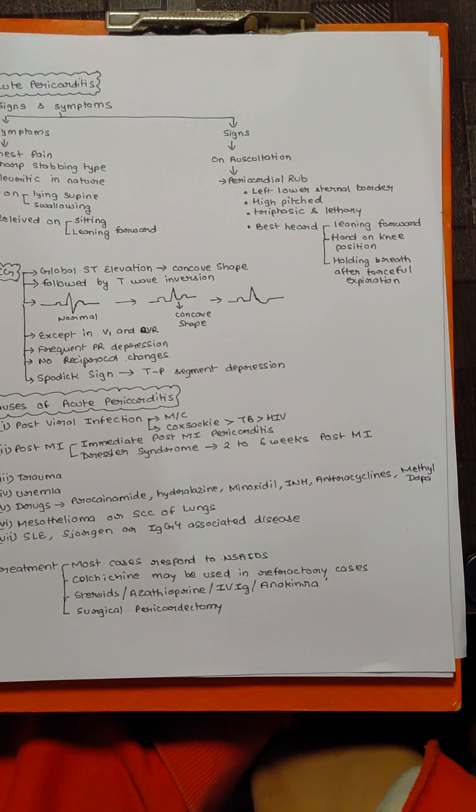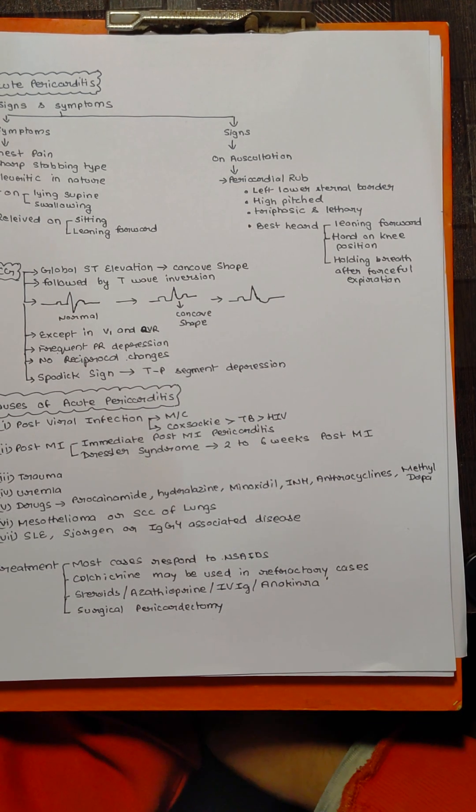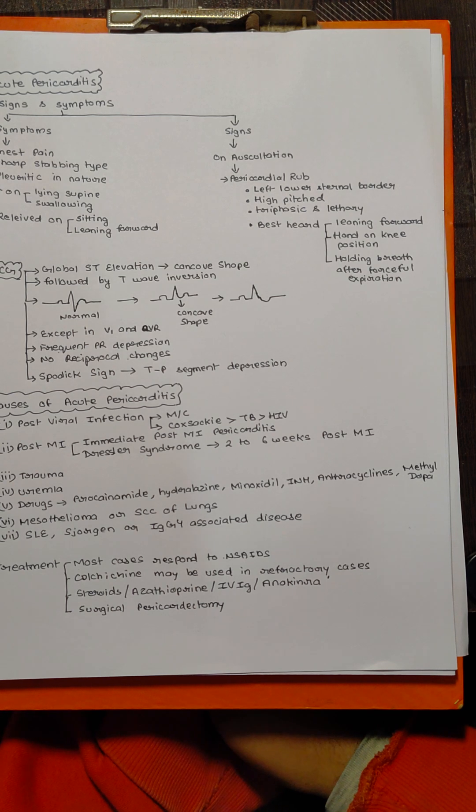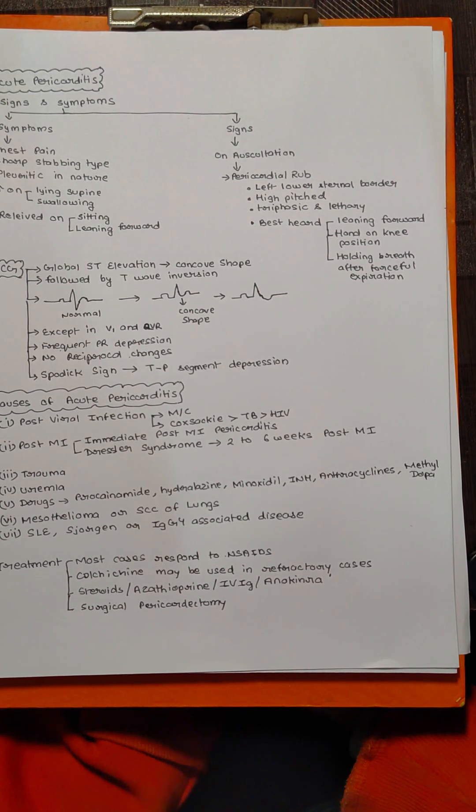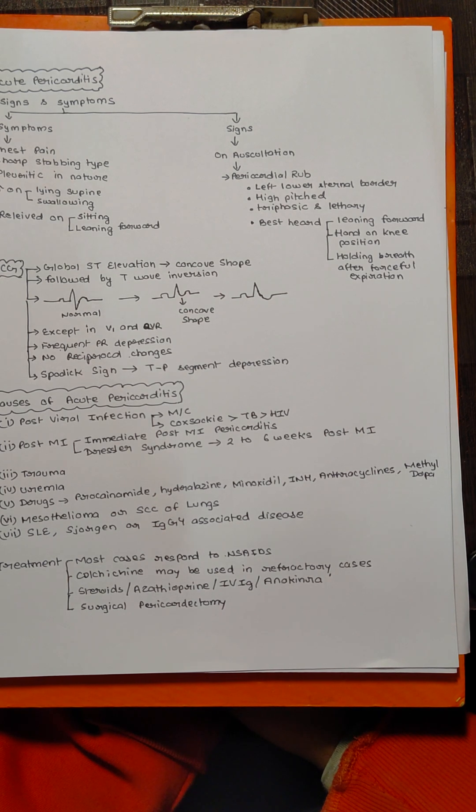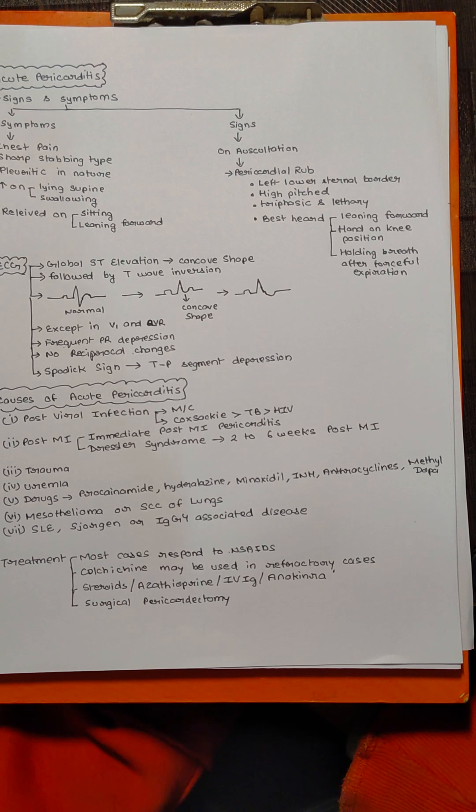In acute viral pericarditis we will see global ST elevation that is concave in shape, except in leads V1 and AVR. We will also see frequent PR depressions and no reciprocal changes.